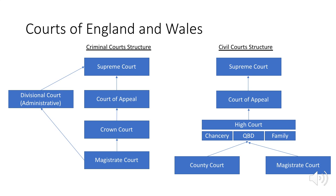Next up you've got the Crown Court, which deals with either-way cases. Then you've got the Court of Appeal, the first of the appeal courts — they deal with challenges to decisions in the Crown. Then you've got the highest court in the land, the Supreme Court, which hears appeals on arguable points of law and general public importance, concentrating on cases of the greatest constitutional importance. Then you've got the Divisional Court, which deals with judicial reviews made by other courts and tribunals, and hears challenges to decisions made by certain people and government bodies where legislation has given the right to challenge.